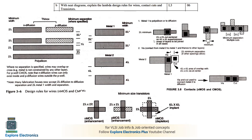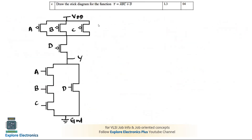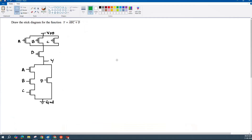Next question: draw the stick diagram for Y = (ABC + D)̄. For the pull-down network, A, B, and C are in series, and D is in parallel with ABC. In the pull-up network, A, B, and C are in parallel, in series with the D transistor. The output Y is taken at the junction of pull-up and pull-down networks; pull-up connects to VDD and pull-down to ground.